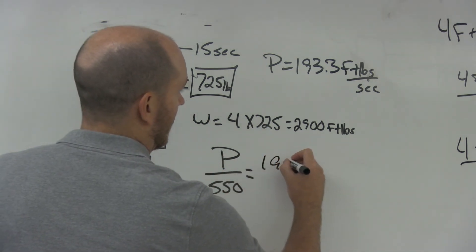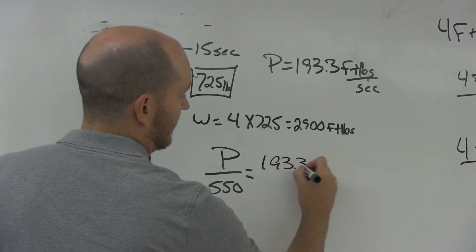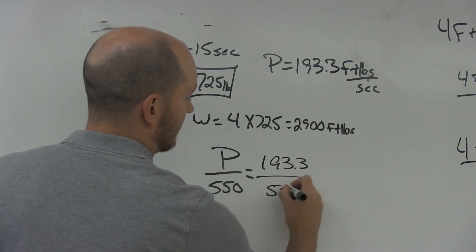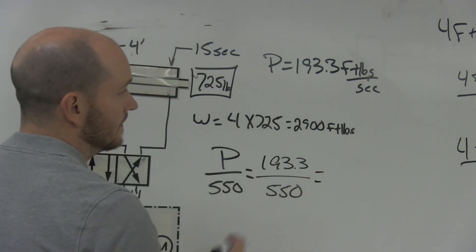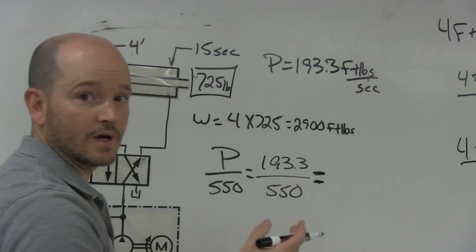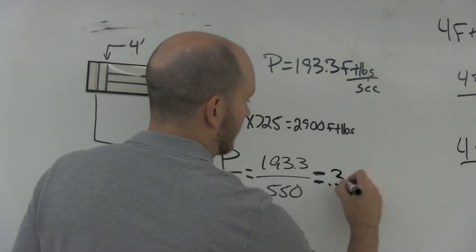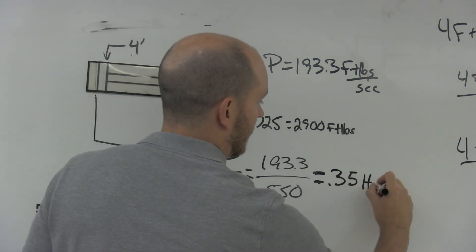So 193.3 divided by 550 equals 0.35 horsepower.